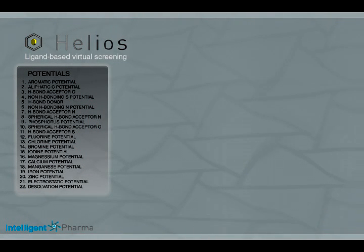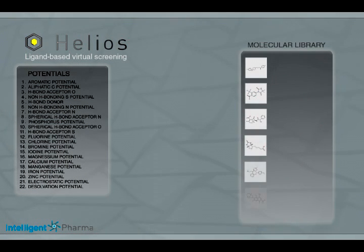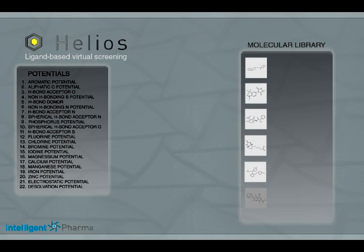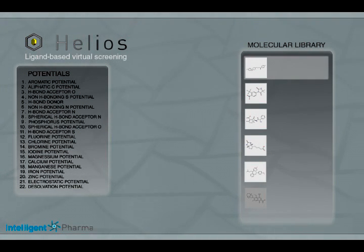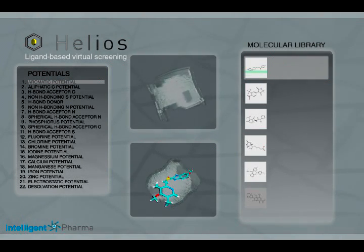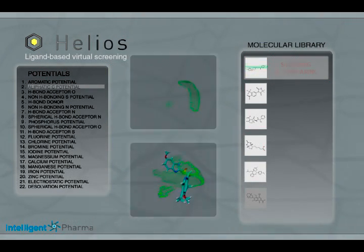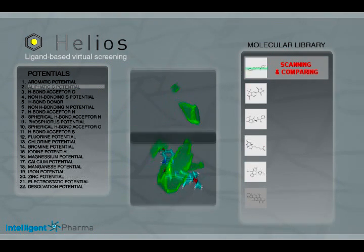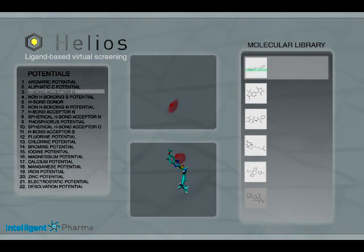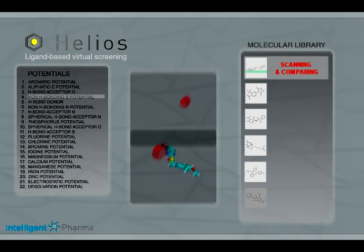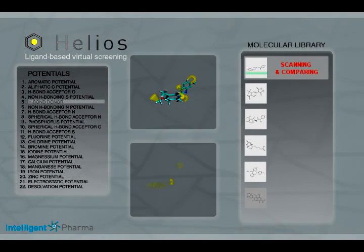The following step consists of finding a compound that is able to mimic the 22 molecular potential maps of the reference compound. Therefore, a molecule database specified by the client is analysed. Of each molecule, the molecular fields are calculated and compared to the fields of the reference compound by superposition. The higher the similarity between all 22 potentials, the better the ranking of the investigated molecule in respect to other compounds in the molecule database.